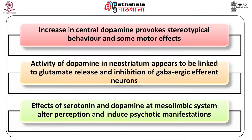Amphetamines also have weak monoamine oxidase inhibiting property. The most prominent effects of amphetamines are the catecholamine effects as a result of stimulation of peripheral alpha and beta adrenergic receptors. Enhanced concentration of noradrenaline at the locus coeruleus is responsible for the anorexic and stimulating effects as well as to some extent for the motor stimulating effects. The increase in central dopamine especially in the neostriatum provokes stereotypical behaviour and some motor effects, and appears to be linked to glutamate release and inhibition of GABAergic efferent neurons, contributing significantly to stereotypical behaviour, locomotor effects and neurotoxicity.